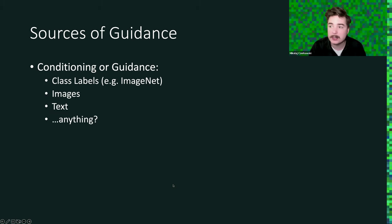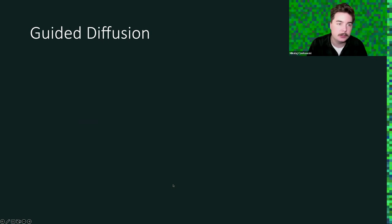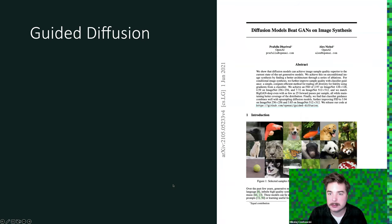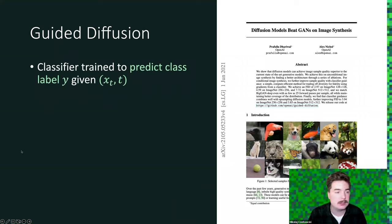One of the earliest developments in this context was guided diffusion. In the diffusion models beat GANs on image synthesis paper, it has been proposed to guide the diffusion process. We train a classifier to predict class y given x_t and t. So we don't just use a regular classifier. We use a classifier that has the context of the stage of diffusion.